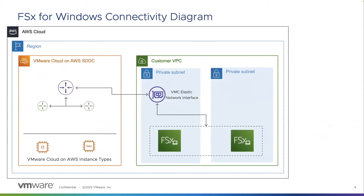Let's look at the diagram and figure out how this ties together. We have the SDDC — the VMC on AWS SDDC on the left — and then the customer VPC on the right. When deploying an FSx for Windows File Server, you have two options on where it should be deployed. You can choose to utilize the same private subnet being used for the ENI or elastic network interface deployed with VMC, or deploy in a completely separate subnet in an availability zone. It should also be noted that you do have to have a Microsoft Active Directory domain that you're integrating with. This can be done with the Amazon managed Microsoft AD or through a customer-hosted Active Directory.